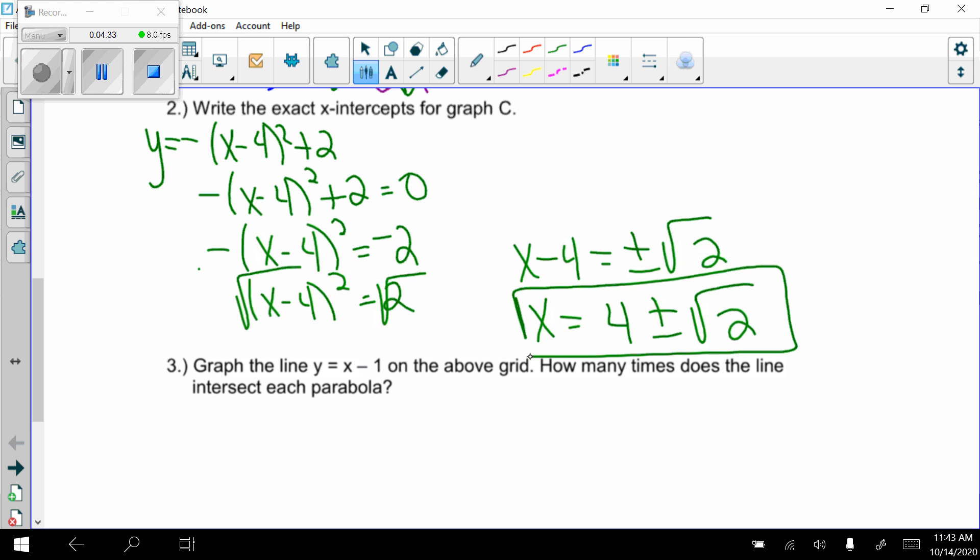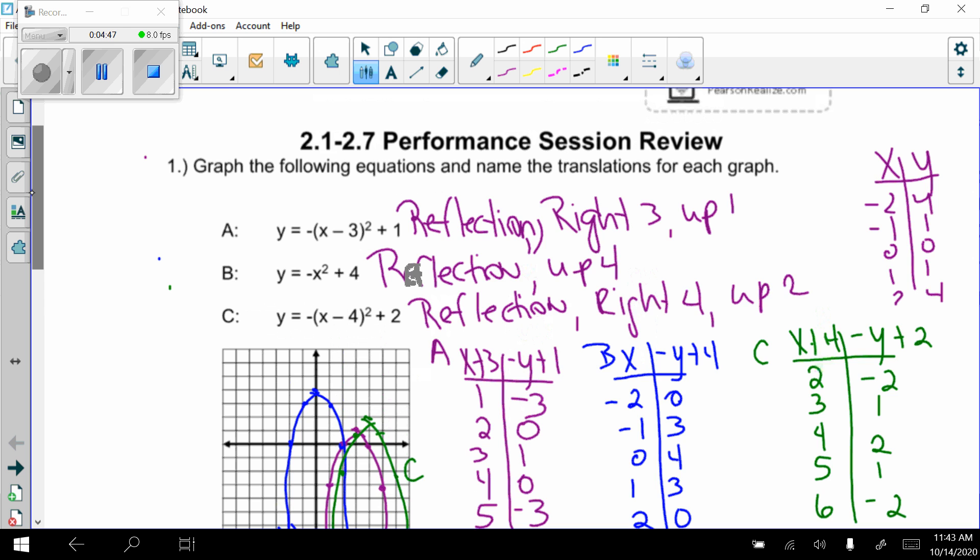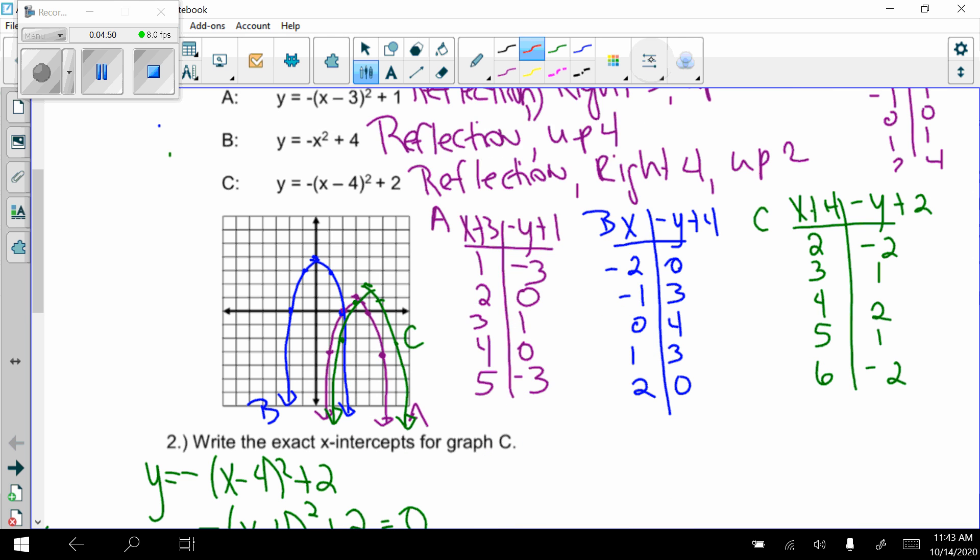Number 3, graph the line y equals x minus 1 on the above grid. So if I'm graphing y equals x minus 1, my slope is 1. My y-intercept is negative 1. So I start at negative 1 on the y-axis. My slope was 1, so up 1 over 1. Up 1 over 1. Up 1 over 1. Down 1 over 1. So this is the line.